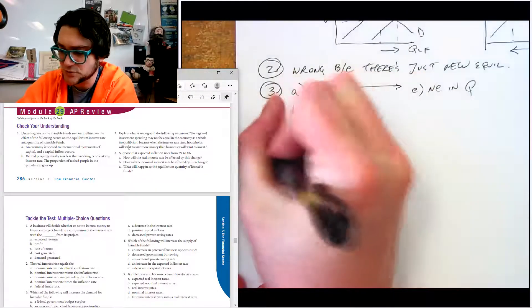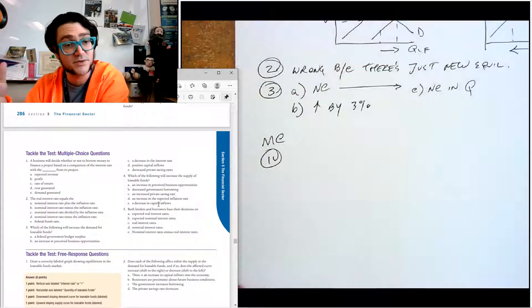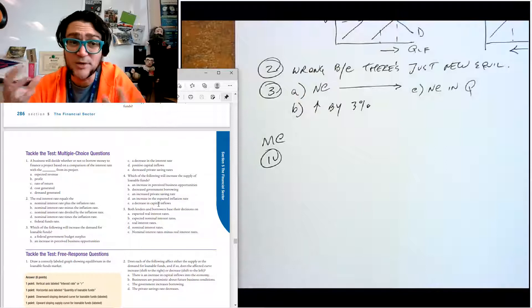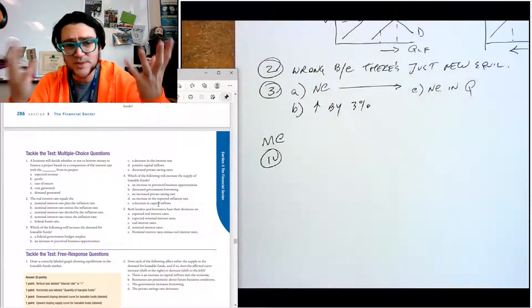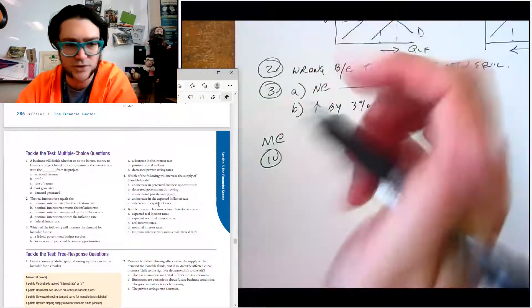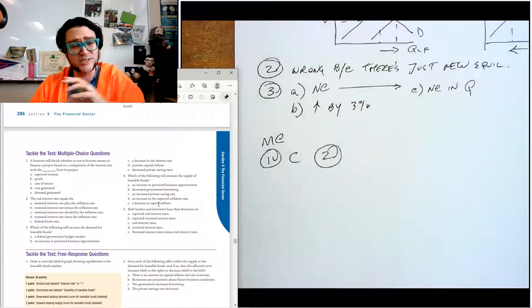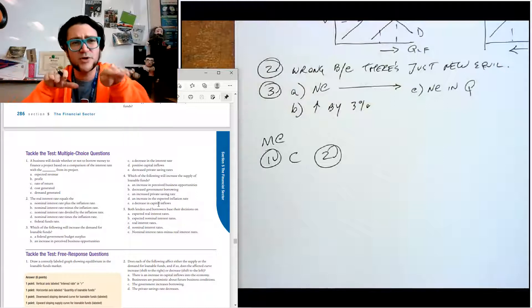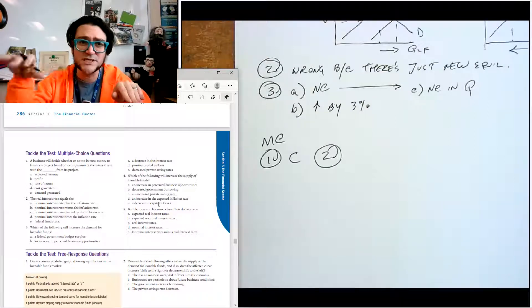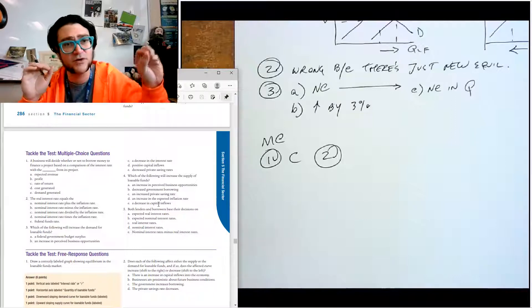Let's take a look at these multiple choice questions. MC number one says a business will decide whether or not to borrow money to finance a project based on a comparison of the interest rate with the rate of return generated from the project. So this is a phrase that you might not be familiar with, but it's the idea that if you're a business, you would want to compare what's the cost of borrowing to what I expect to earn. And we call that the rate of return. So C.